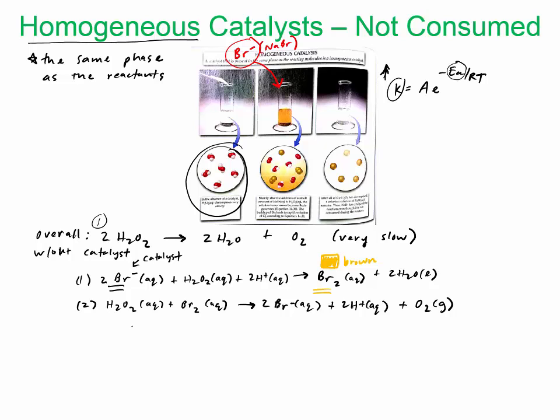This intermediate gets consumed in the second step, plus Br2, and then you get 2 Br minus plus O2 gas. So you'll see that the bromine gas is actually produced in the first step, and then it gets consumed in the second step, so we call that an intermediate. You'll notice the Br minus, we began with that, and then it ended up being regenerated at the end of this reaction, so we call that a catalyst.